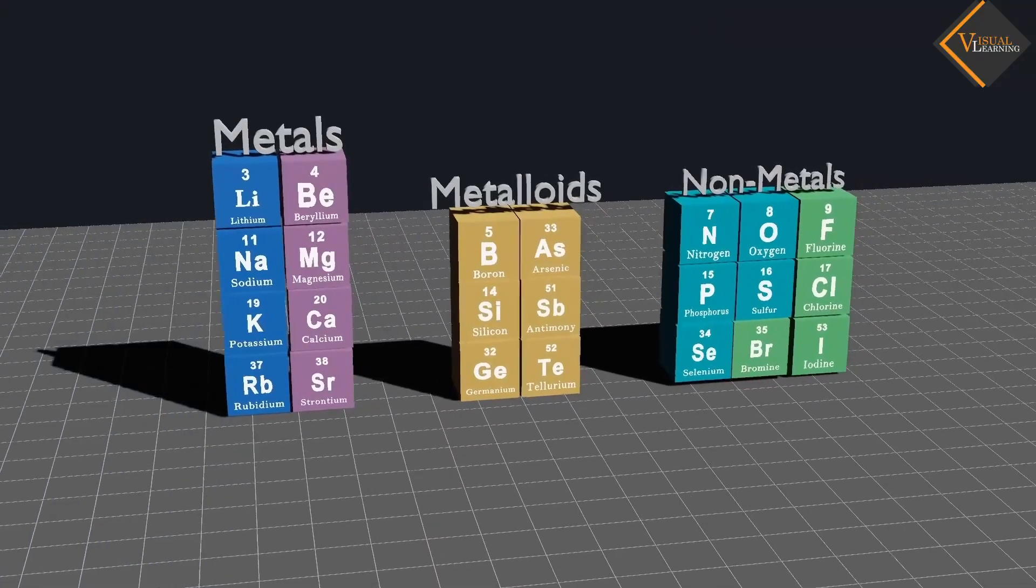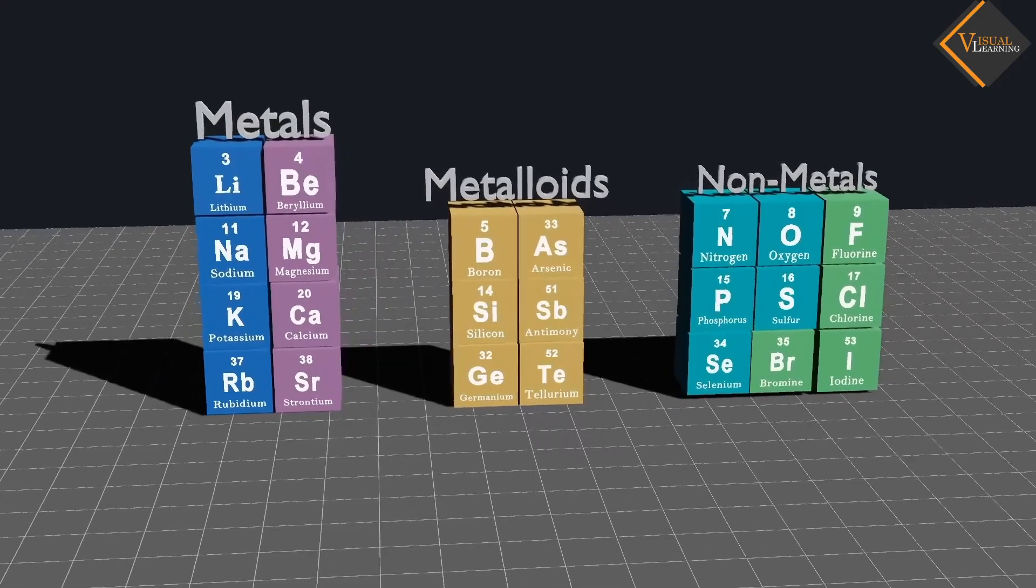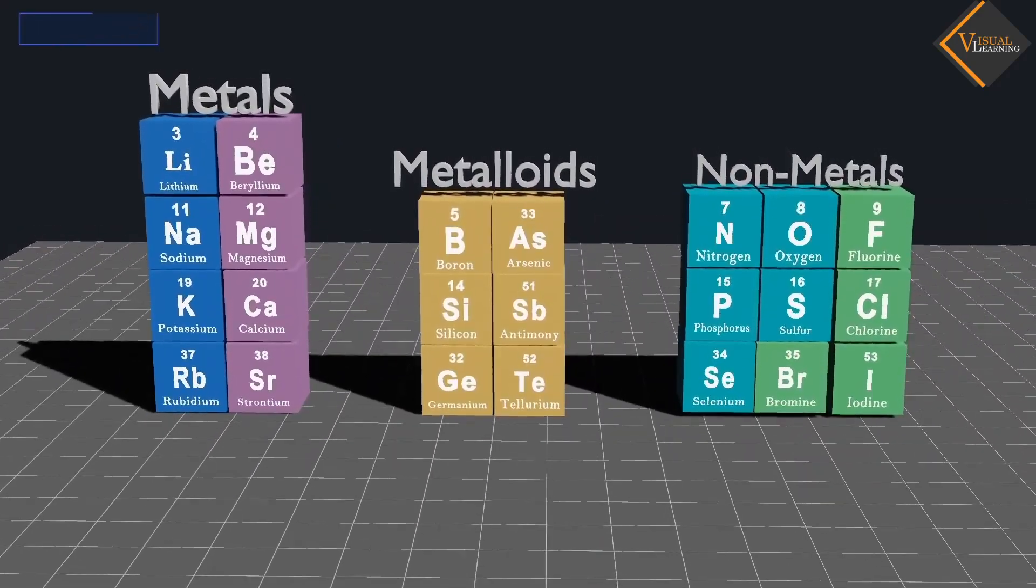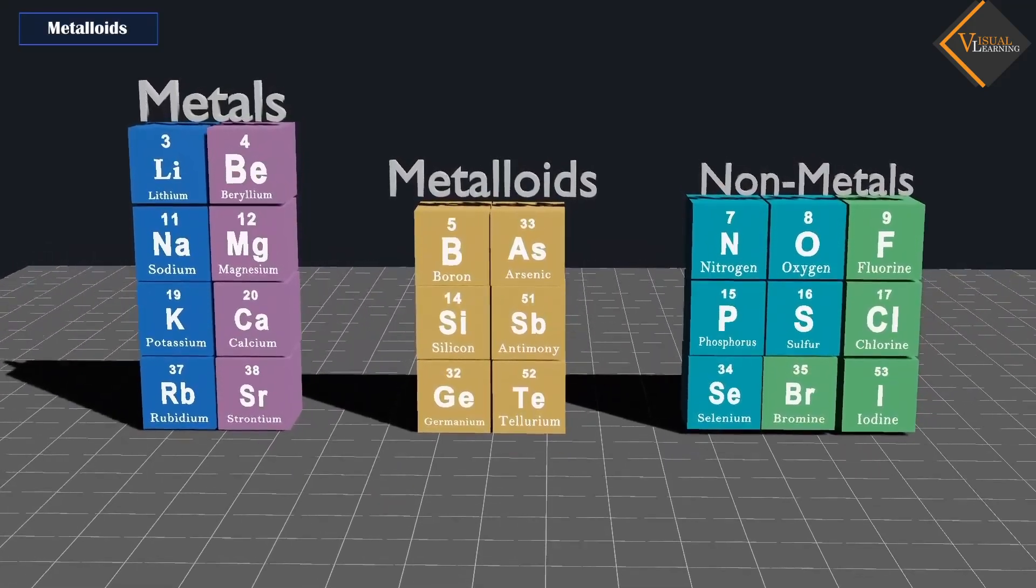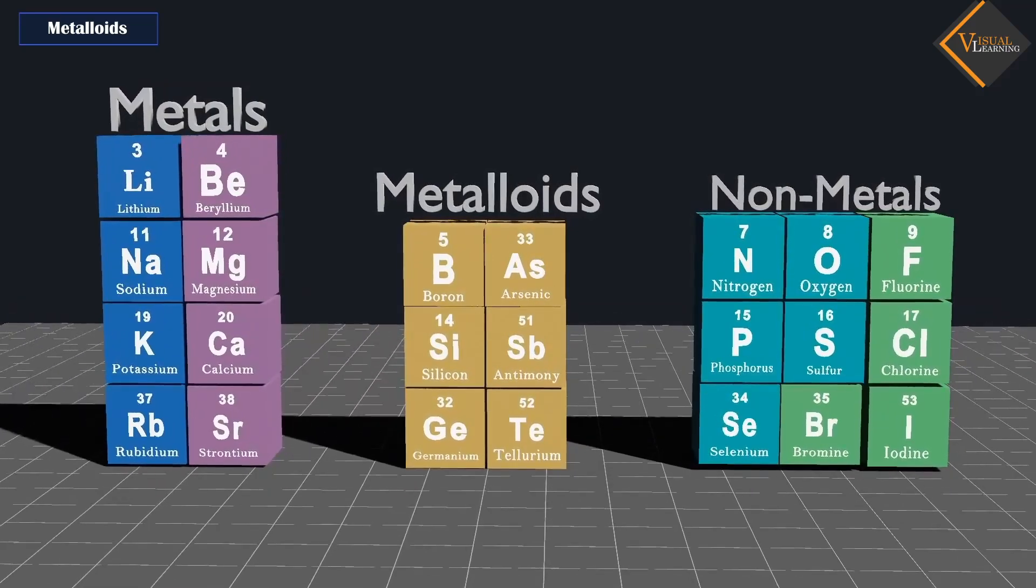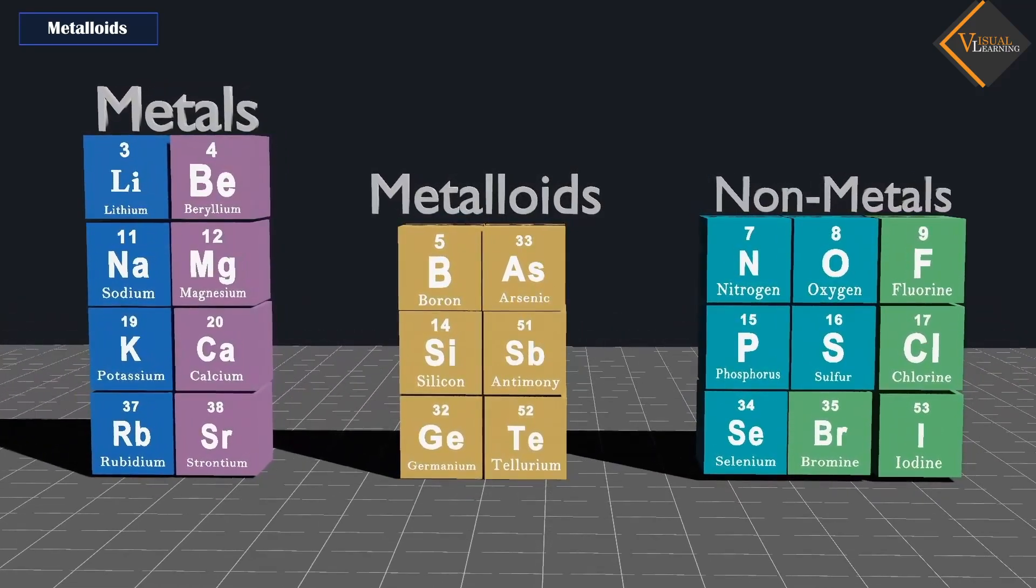Some elements have intermediate properties between those of metals and nonmetals. They are called metalloids. Examples of metalloids are boron, silicon, and germanium.